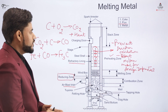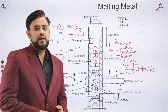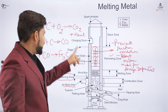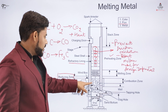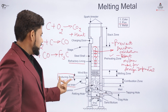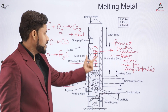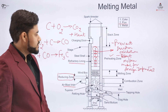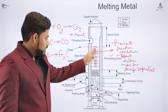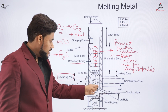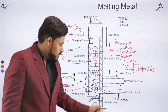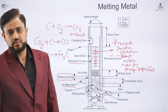The cupola furnace is one of the furnaces used to melt metal. In the combustion zone there is an exothermic reaction; above that in the reducing zone, carbon monoxide is formed, which is responsible for the formation of Fe₃C — the molten state of the metal. From there, the molten metal flows downward and exits through the tapping hole into the crucible.